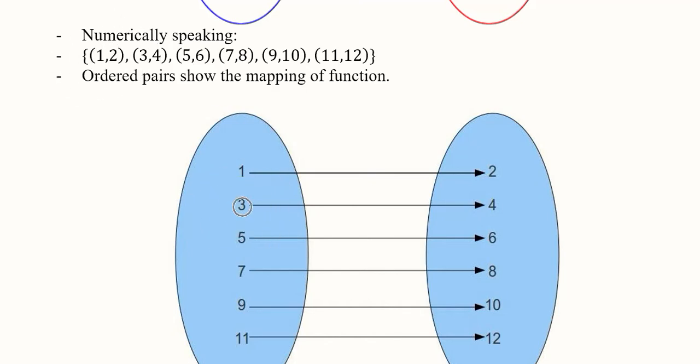And 3 is a value of this variable and 4 will be the response of it, and then 5 and 6. In this way you can see that we can write the function in this way which is a mapping diagram.